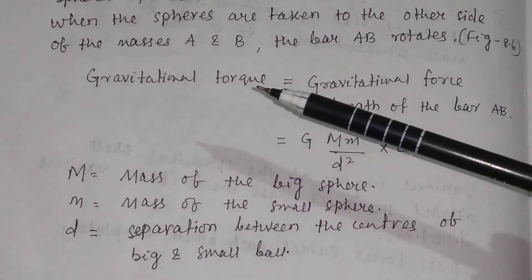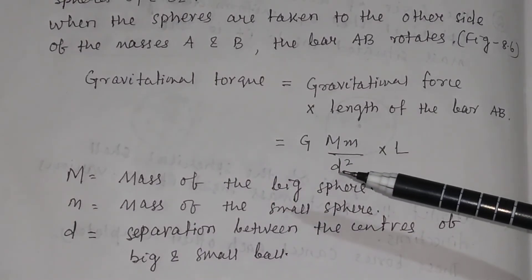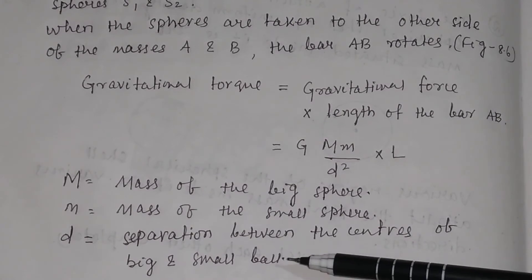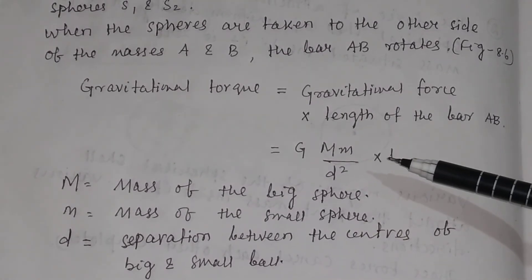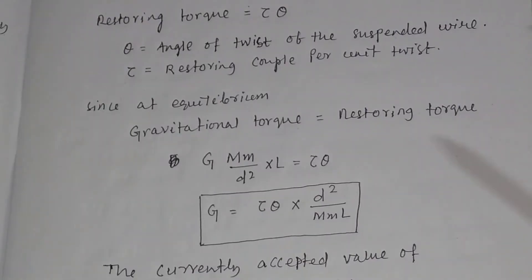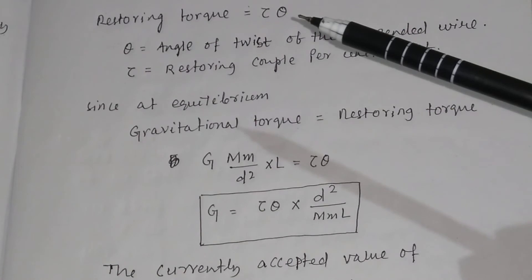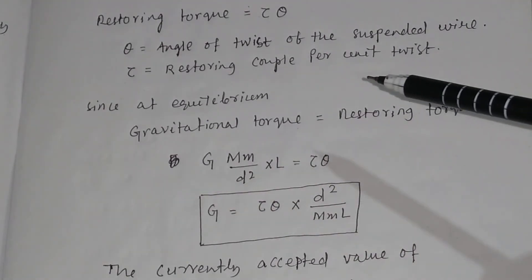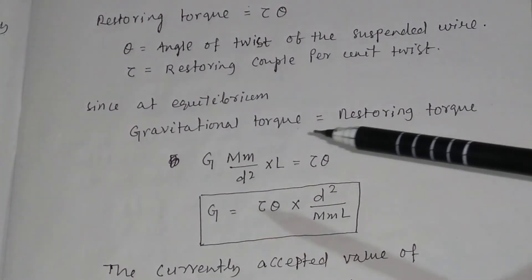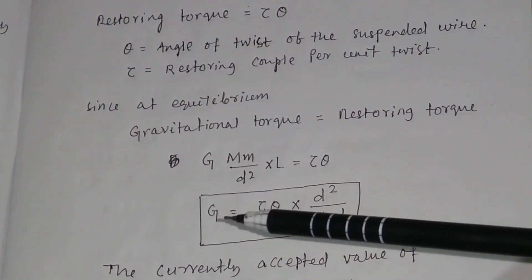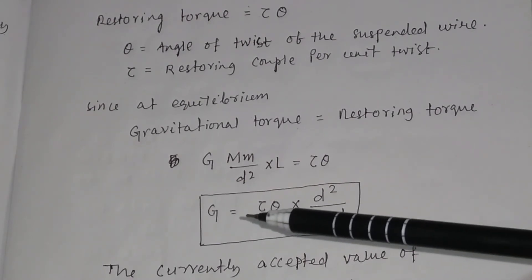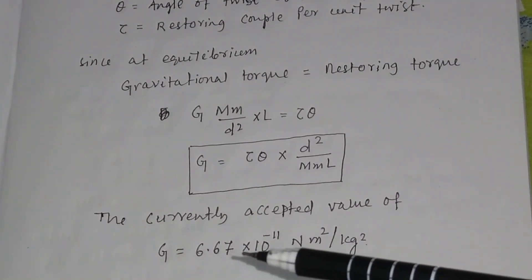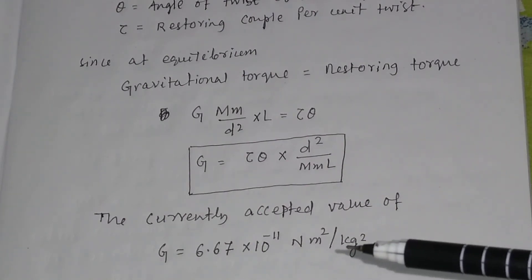Mathematically, the gravitational torque equals G·mM divided by D² multiplied by L, where D is the separation between the centers of the big and small balls, and L is the length of bar AB. The restoring torque equals τ·θ, where θ is the angle of twist of the suspended wire and τ is the restoring couple per unit twist. At equilibrium, these are equal, allowing us to find the universal gravitational constant G. The currently accepted value is G = 6.67 × 10⁻¹¹ N·m²/kg².